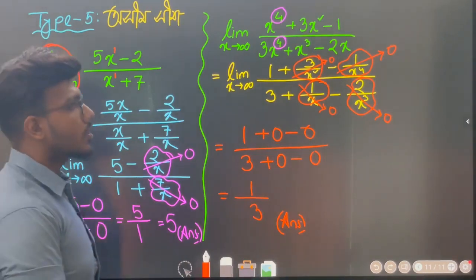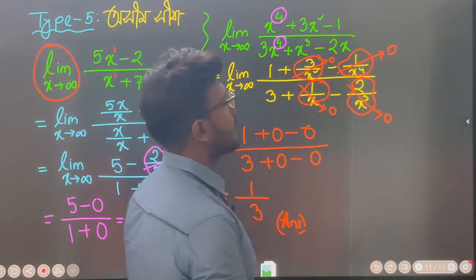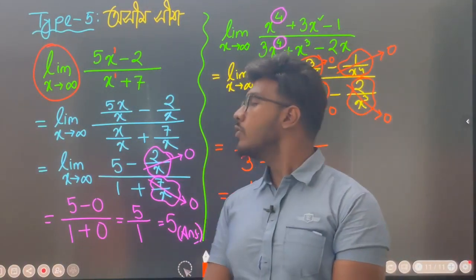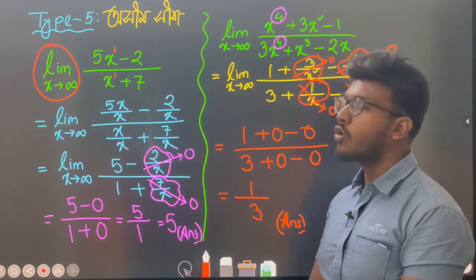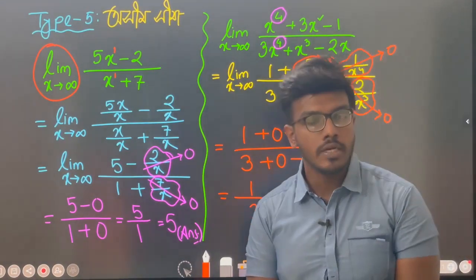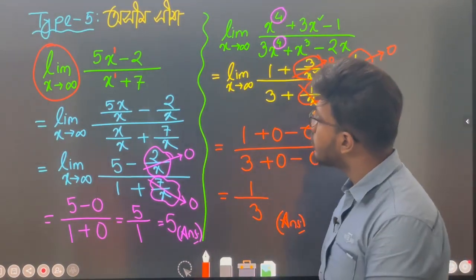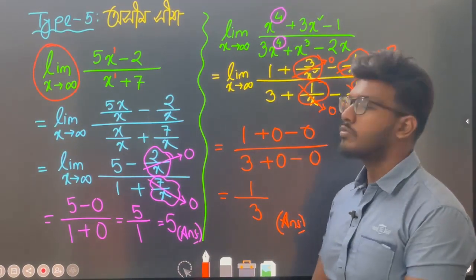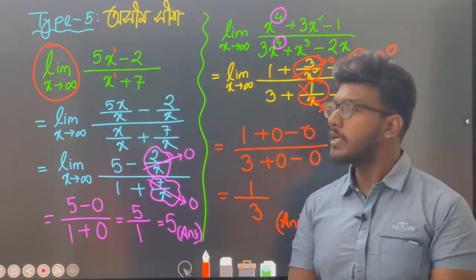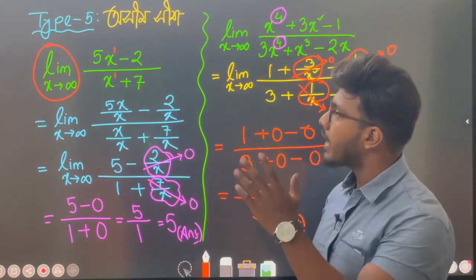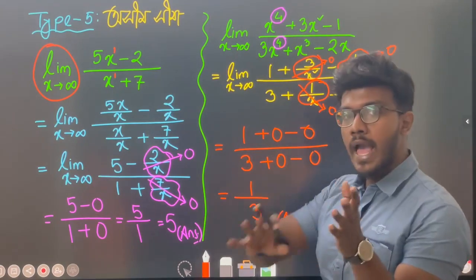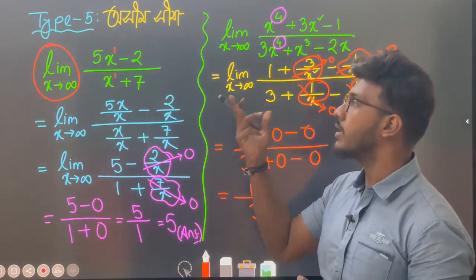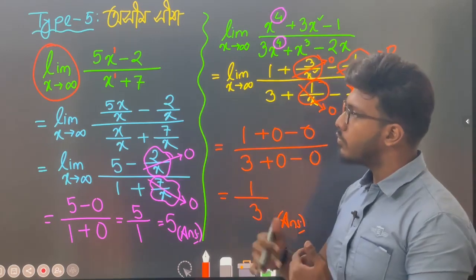When you encounter answers of this type, we will try to make it clear over the playlist. There are 2 types of table limit, which we will try to cover. If you are thinking about it, we will try to make a separate video for type 5 and see the case of 1 type.